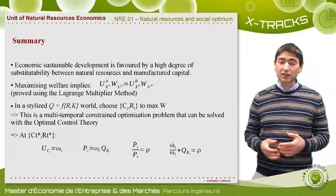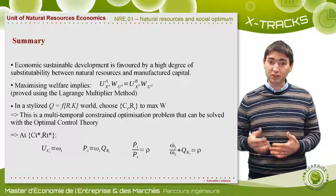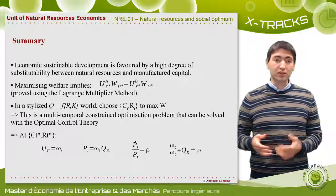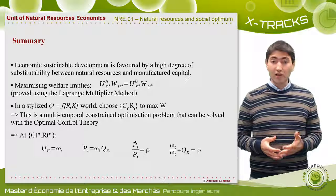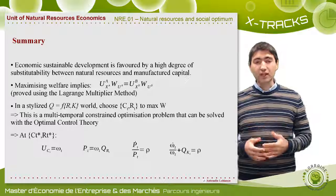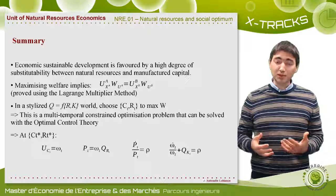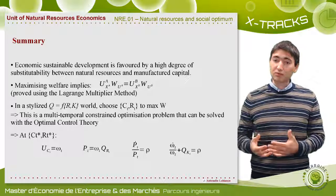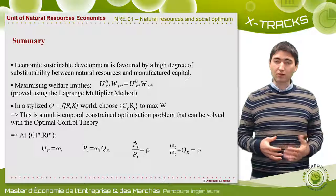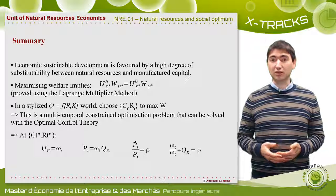The first dynamic efficiency condition is that the natural resource stock value, measured using the shadow price of the resource in situ p, must grow at the social rate of discount rho. This rule is known as the Hotelling rule — a very important result in natural resource economics. The second dynamic efficiency condition is that the overall return of the capital stock — its increasing value from its shadow price omega plus the additional marginal productivity that such capital stock holds, Q_k — must again be equal to the social rate of discount rho.